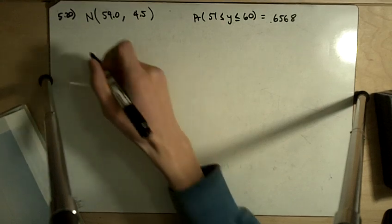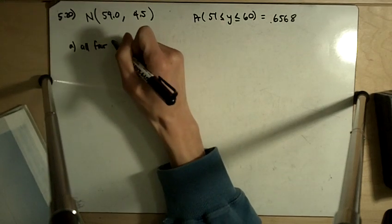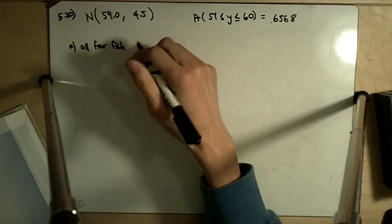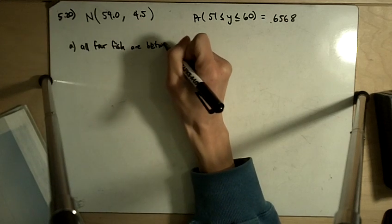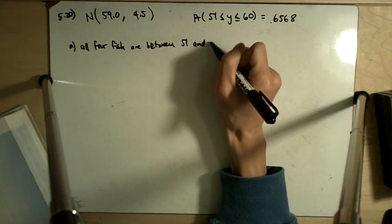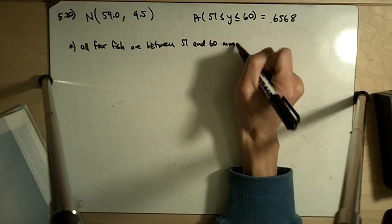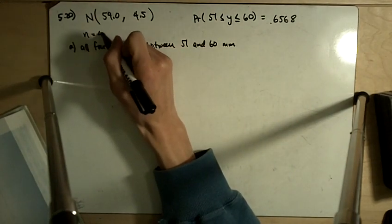And then here it says find the probability that all four fish are between 51 and 60 millimeters. This is for a group of four fish, n equals four fish.